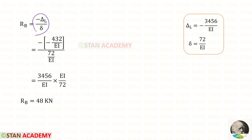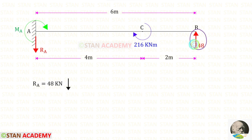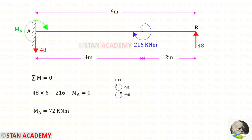We have now found both delta_L and delta. Applying them, RB works out to 48 kN. Now let us find RA. In this beam there is no distributed load, so the values of RA and RB will be the same magnitude but in opposite directions. Since RB is acting upward, RA should be acting downward.